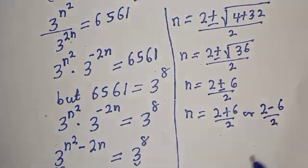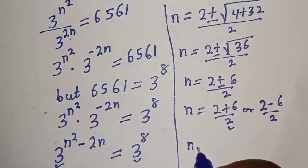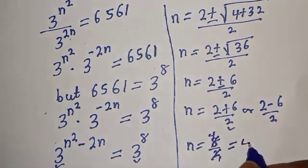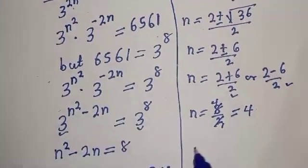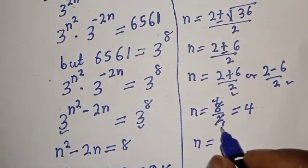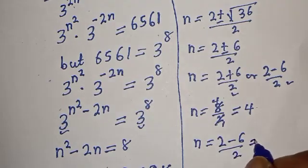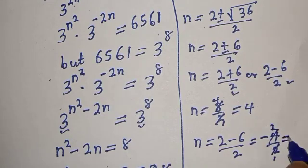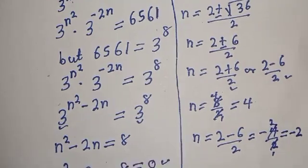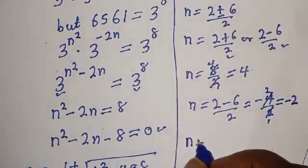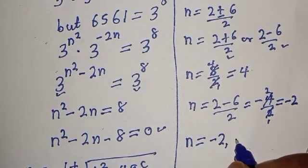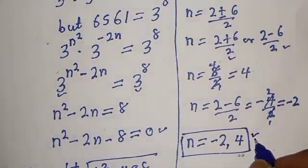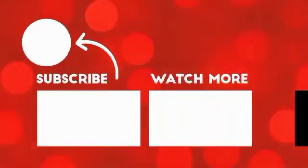Taking the positive case: n equals 2 plus 6 over 2, which is 8 over 2, giving n equals 4. Taking the negative case: n equals 2 minus 6 over 2, which is minus 4 over 2, giving n equals minus 2. Therefore n equals 4 or n equals minus 2. These are the values of n. Before you leave, like, share, comment and subscribe. Thank you, bye bye.